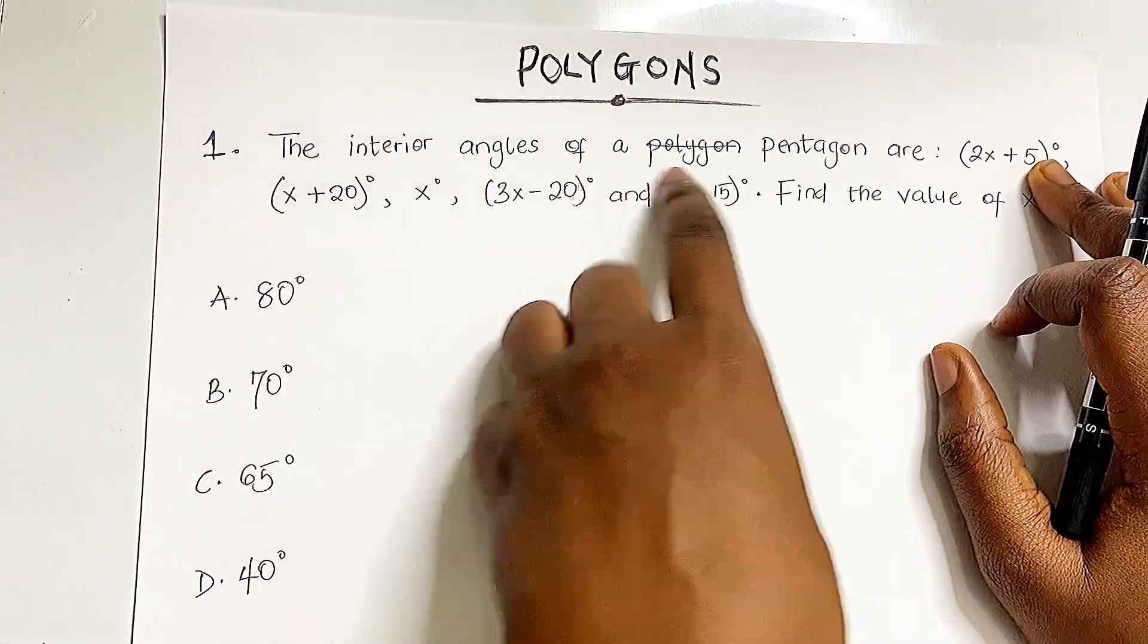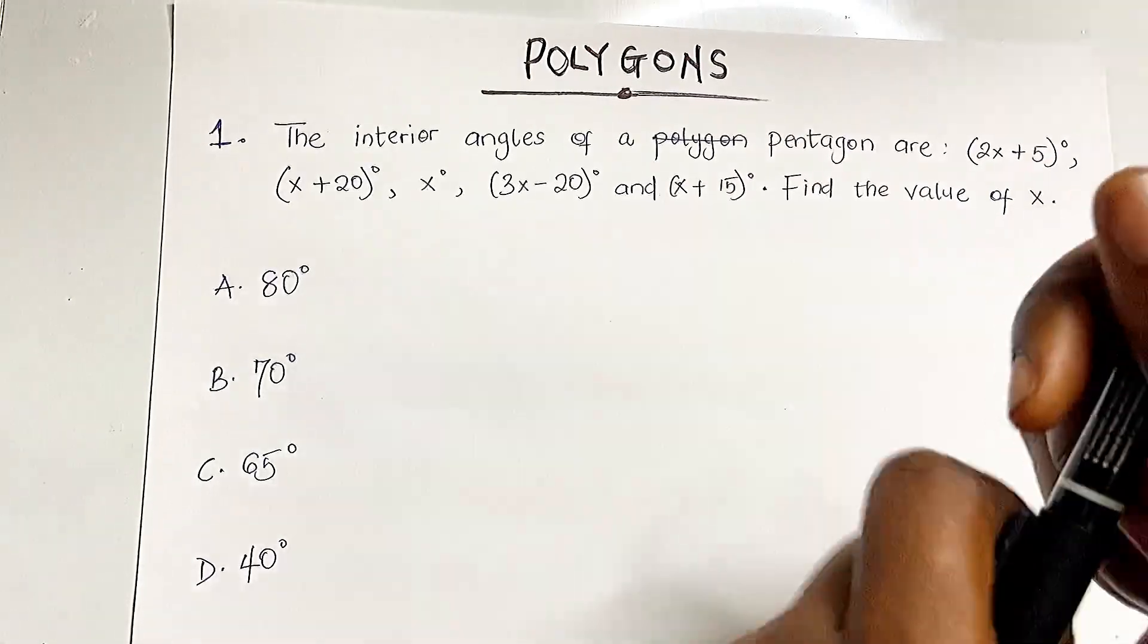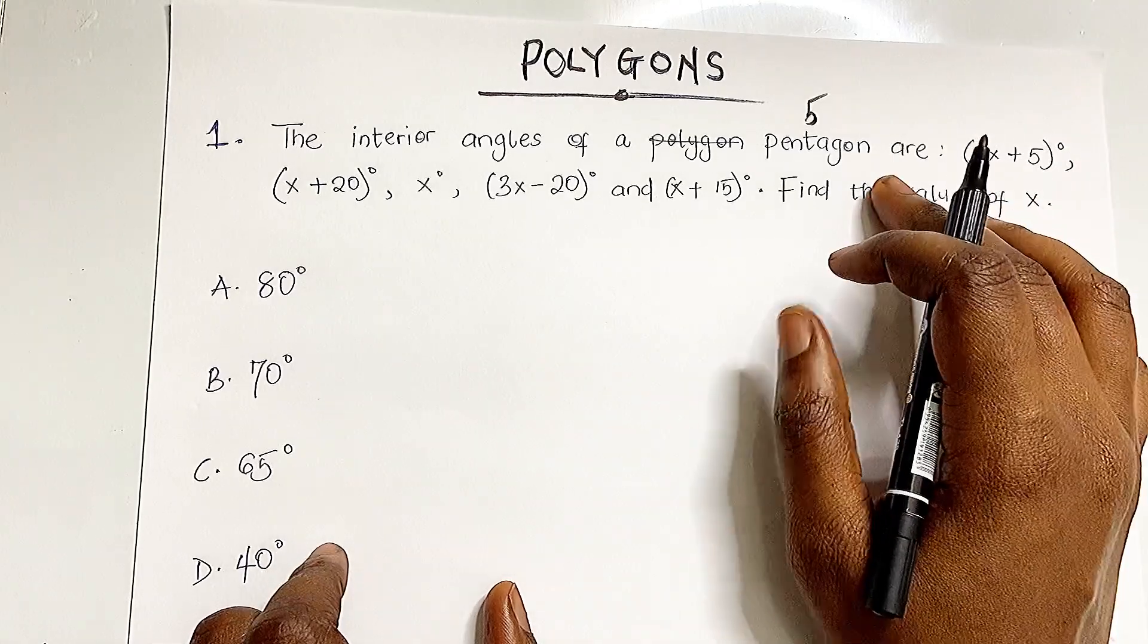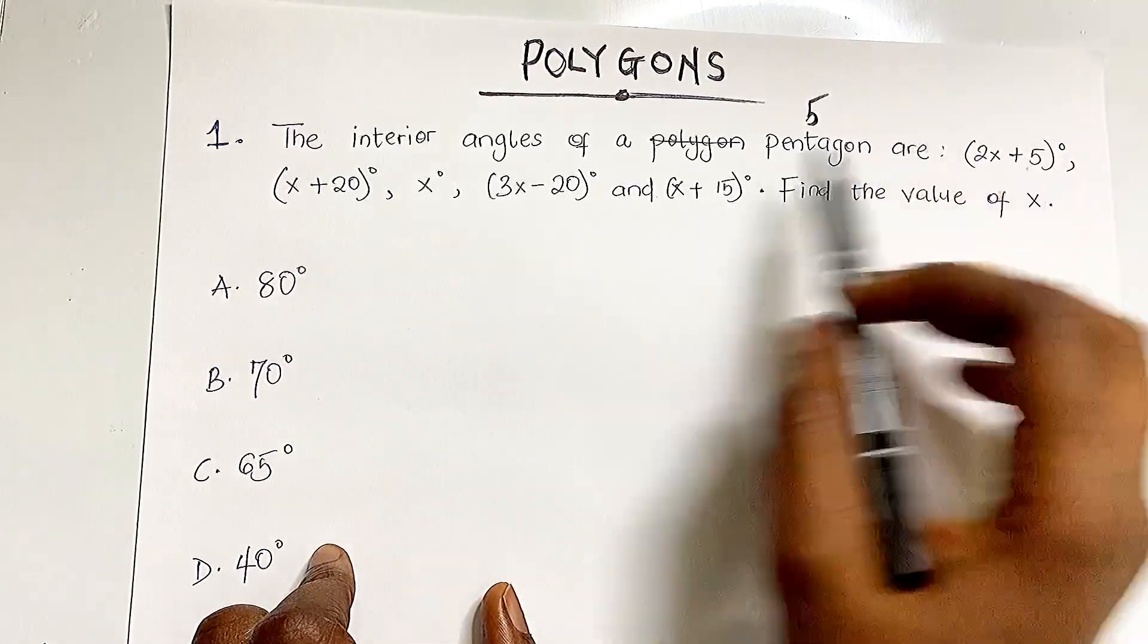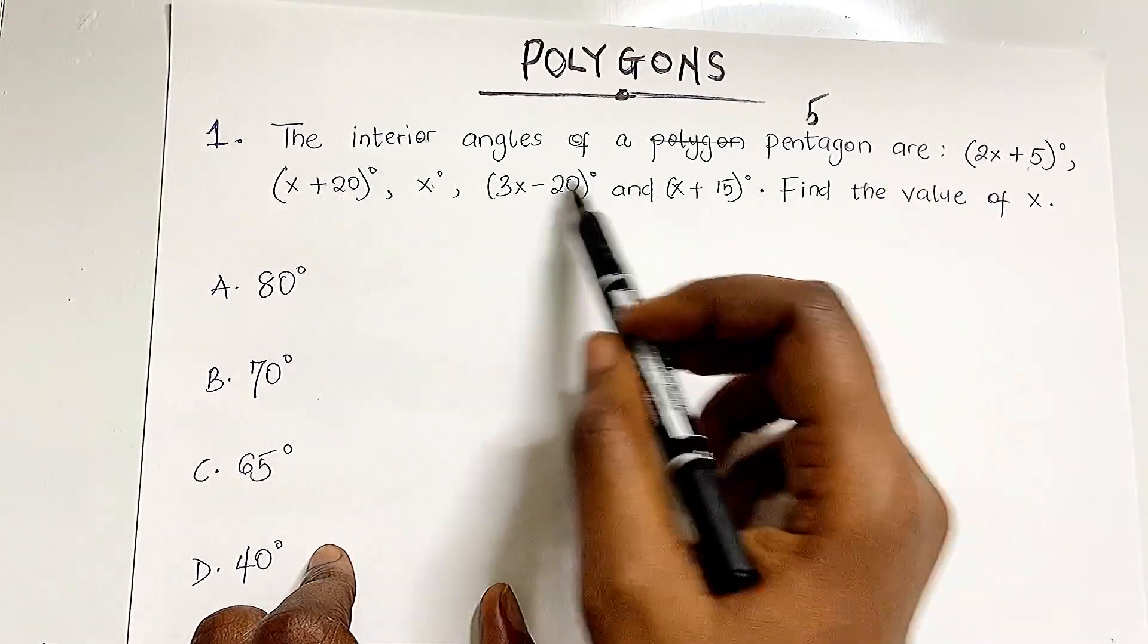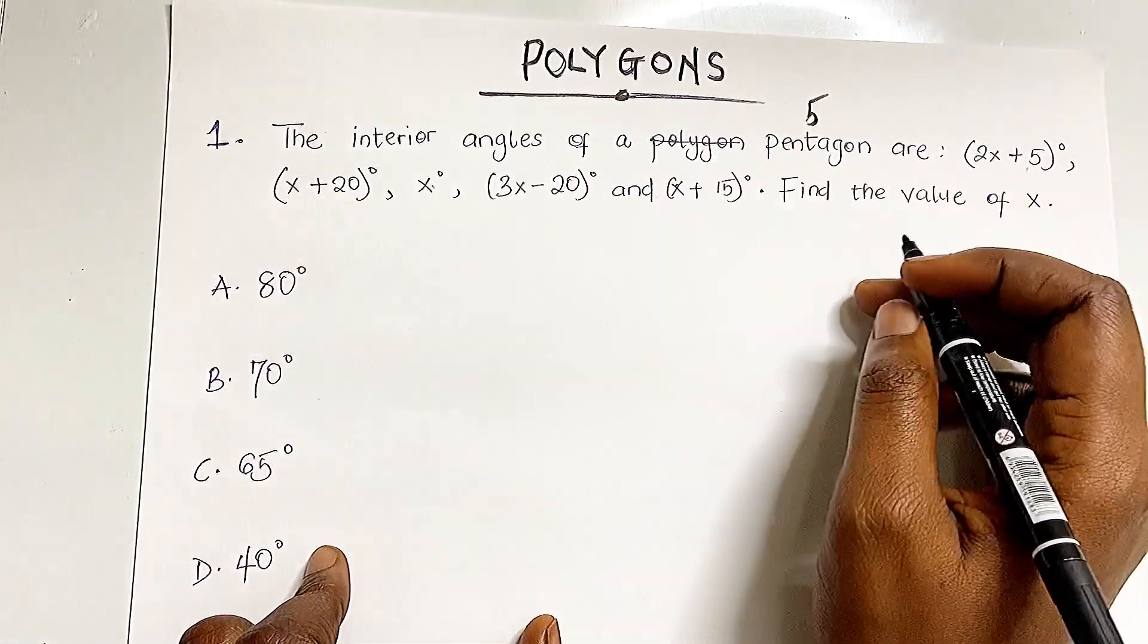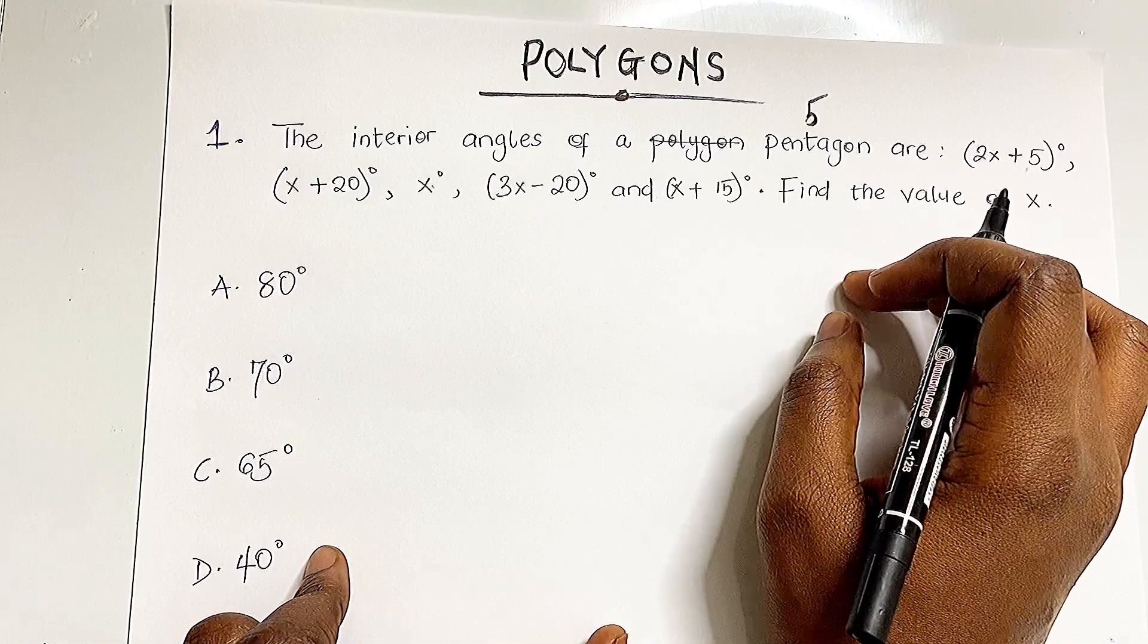The interior angles of a pentagon—a pentagon is a polygon with five sides. The interior angles are given to us in terms of x, and we need to find the value of x. First, you need to know the formula for finding the interior angles of a polygon.